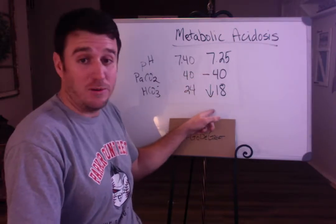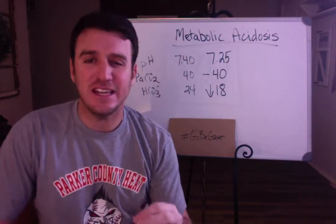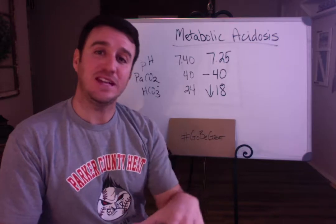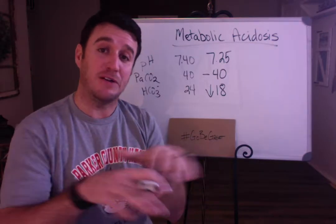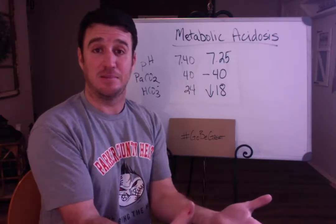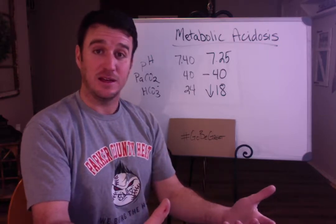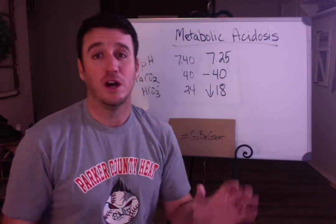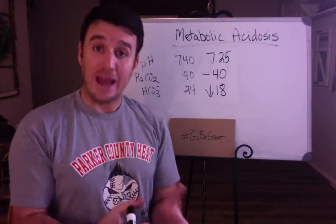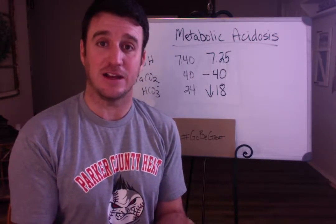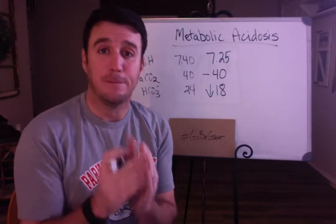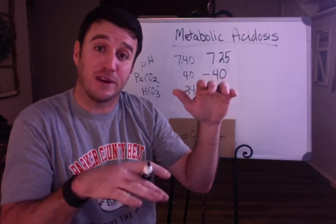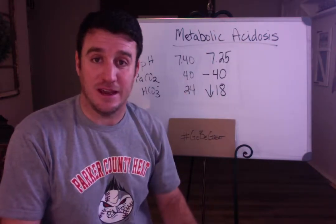A loss of bicarb going down will cause your pH to go down because there are now fewer buffering agents available to buffer the acids in the body. If there are more acids running around freely, obviously your pH has got to go down. This is a 'why greater than how' issue — it's not just 'bicarb goes down so pH goes down.' Why does pH go down when bicarb goes down? Because you've lost buffering agents. You have more acid in the body than buffering agents, and that causes your pH to drop.